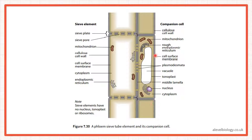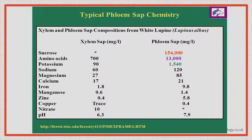In companion cells, we need ATP. You can see the endoplasmic reticulum, nucleus, and vacuole — all the features of a typical cell. The companion cell and the sieve elements are connected via plasmodesmata. This whole structure — phloem sieve tube element along with the companion cell — is what we call phloem.